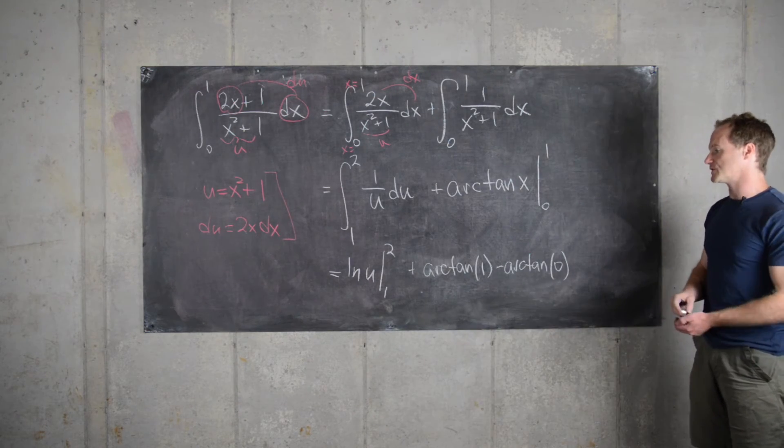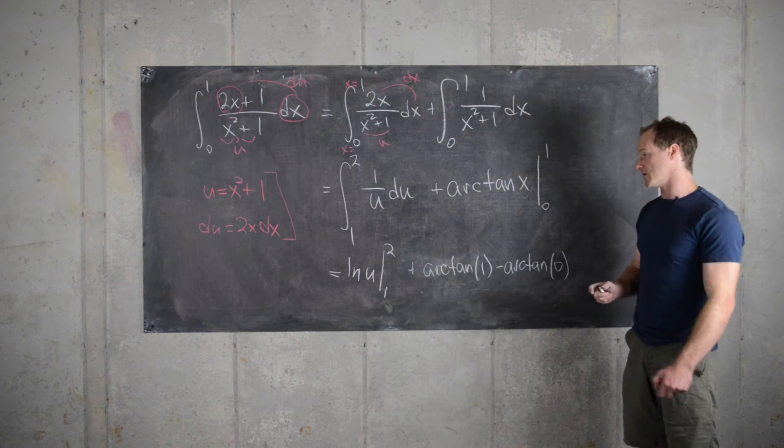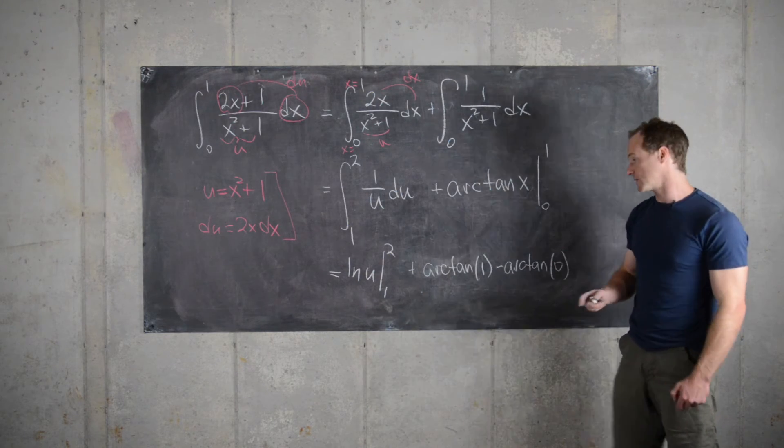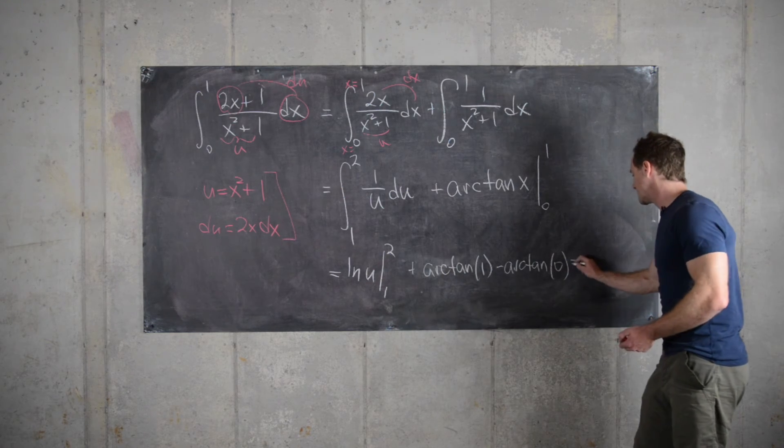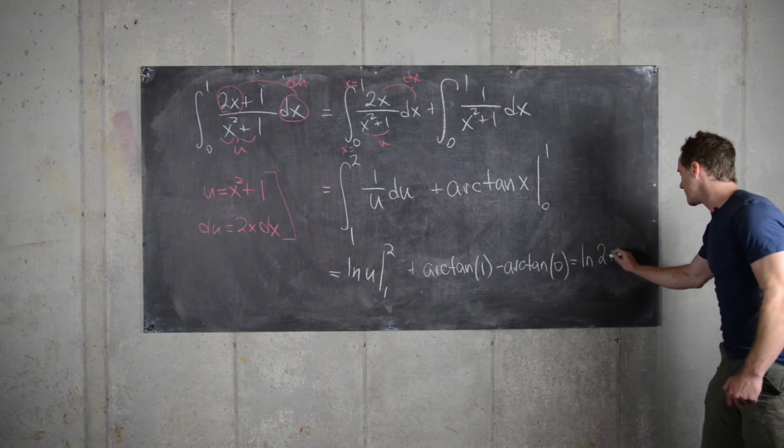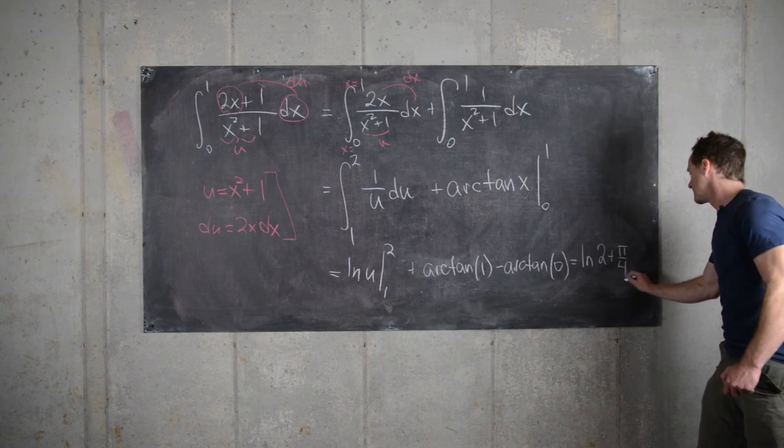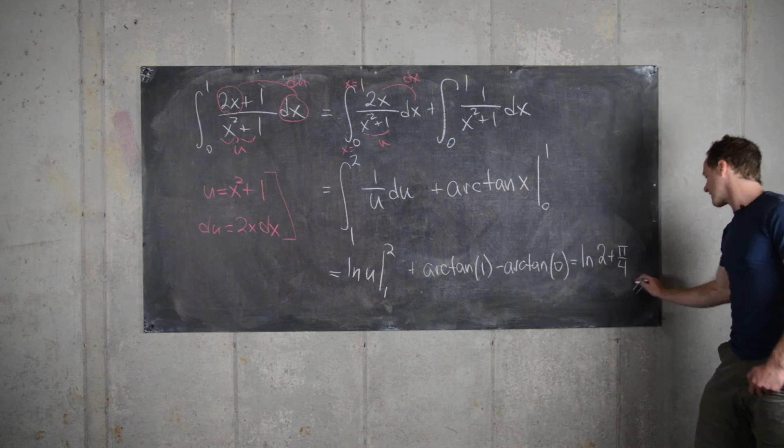So now if we plug in numbers, we'll see what we get. So the natural log of 2, well, that's an irrational number that we can't really write any simpler. The natural log of 1 is obviously 0, so that leaves us in the end with the natural log of 2 plus arctan of 1 is pi over 4, and then arctan of 0 is 0. So there we have our final answer.